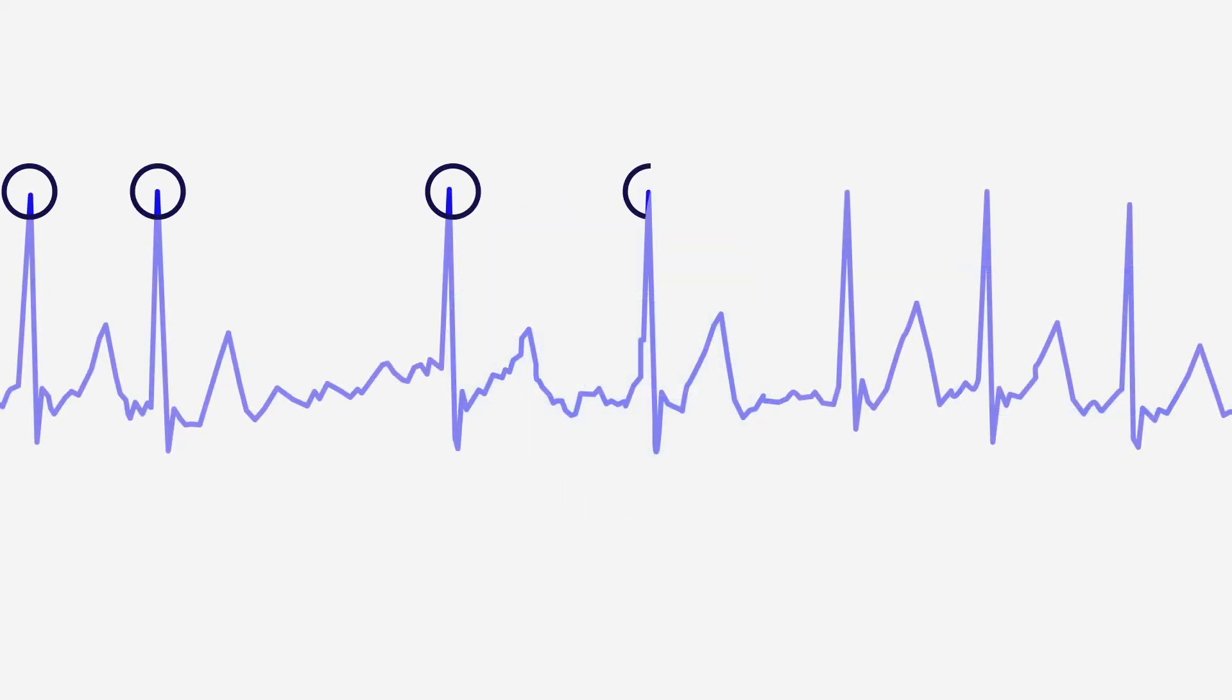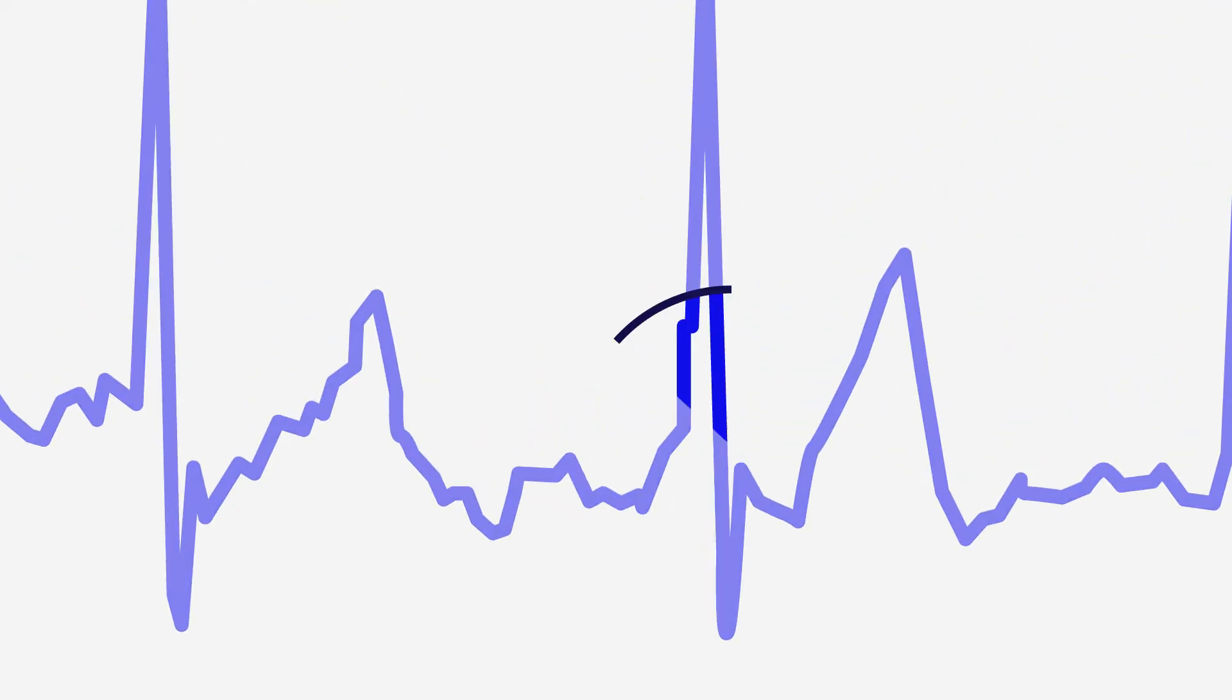Unlike traditional rate-based algorithms in the device that primarily evaluate R-to-R intervals, AcuRythm AI algorithms utilize a rhythm-based approach that looks at every single portion of a waveform.